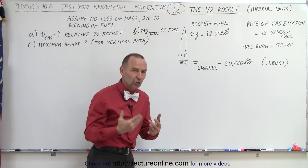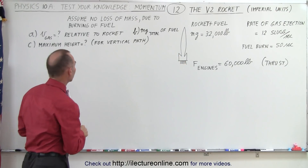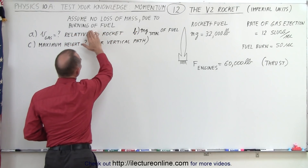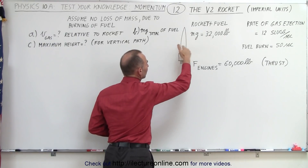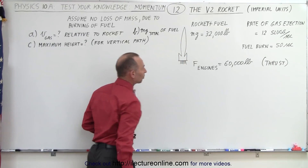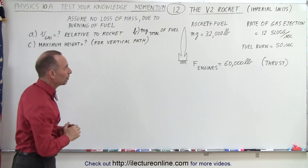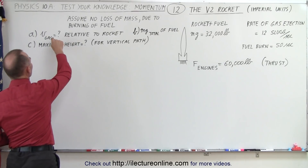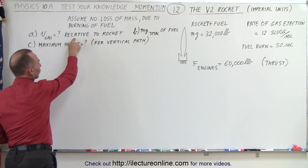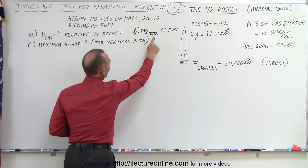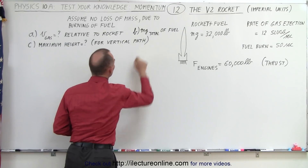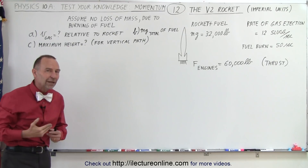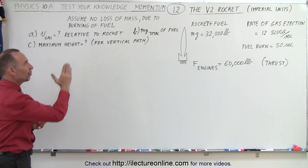Slugs are the units of mass in imperial units. We're going to assume that there's no loss of mass due to burning of the fuel, so we assume that the mass or weight of the rocket plus fuel remains at 32,000 pounds through the entire flight. We need to find: the velocity of the ejected gas relative to the rocket, the total mass or weight of the fuel burned, and the maximum height gained by the rocket assuming a vertical path.